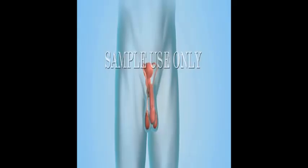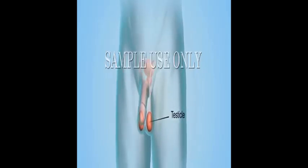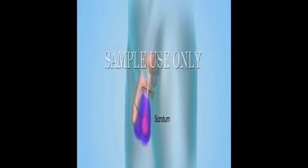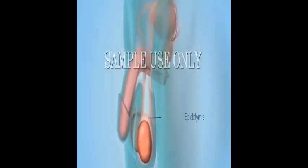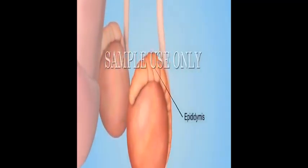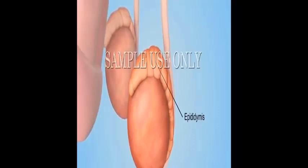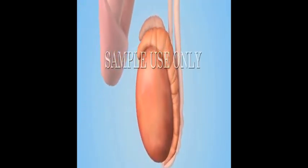The male reproductive system includes two glands called testicles or testes. They're located inside a pouch of skin called the scrotum. The scrotum is outside the body, which keeps the testicles cool enough to make sperm. Connected to each testicle is a mass of coiled tubes, called the epididymis. Each epididymis stores immature sperm while they continue to develop.